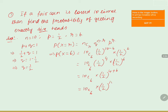We calculate 10C6, which equals 10C4 using the formula nCr = nC(n−r). So we get 10C4 × (1/2)^10. Simplifying this gives the final answer: 105/512.